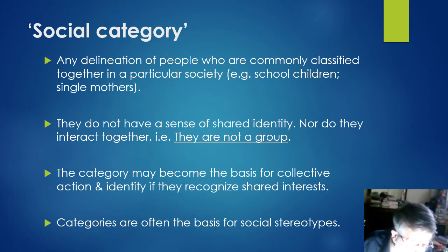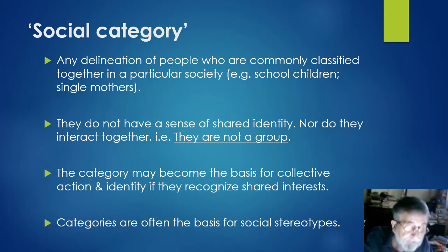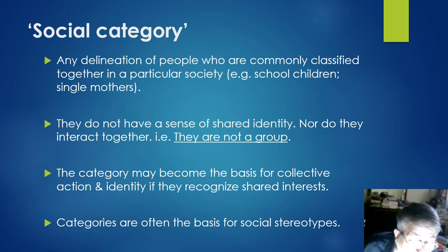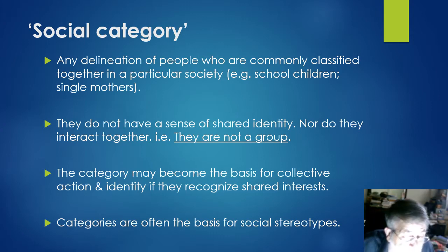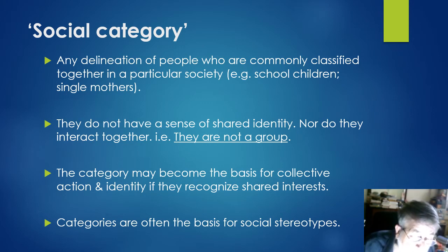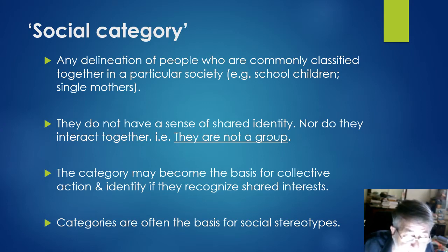A social category is any delineation of people who are commonly classified together by other members of society. Examples include school children, single mothers, retirees, left-handed people, agnostics and Paris taxi drivers. Although members of a particular social category may be grouped together by others, including in some cases by government departments that may use these categories in their forms, those so categorised do not necessarily interact together or associate in any way.